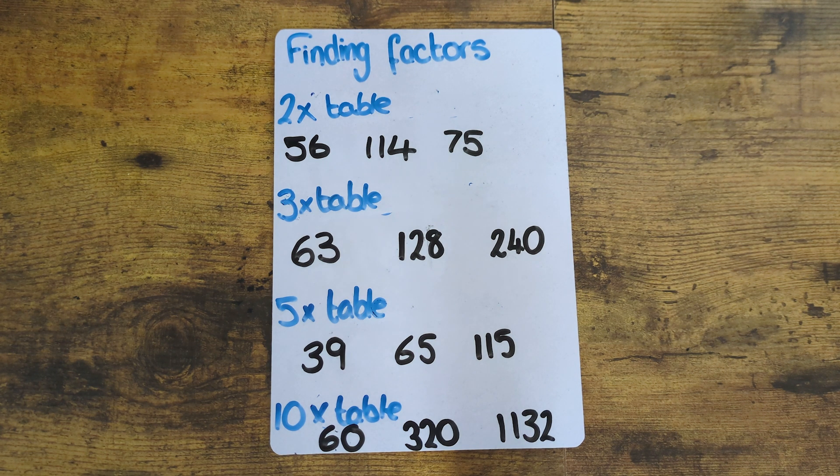So for example you might be needing to find products of prime factors in which case you need to know which times tables different numbers are in. So the main times tables we're going to go through are the twos, the threes, the fives and the tens as these are the most common.